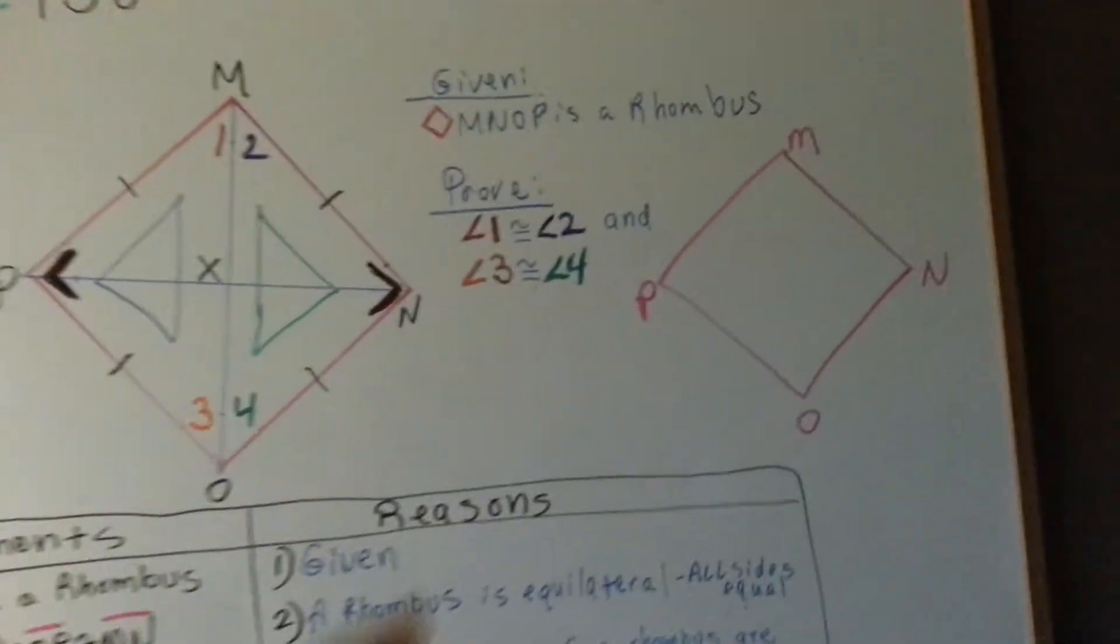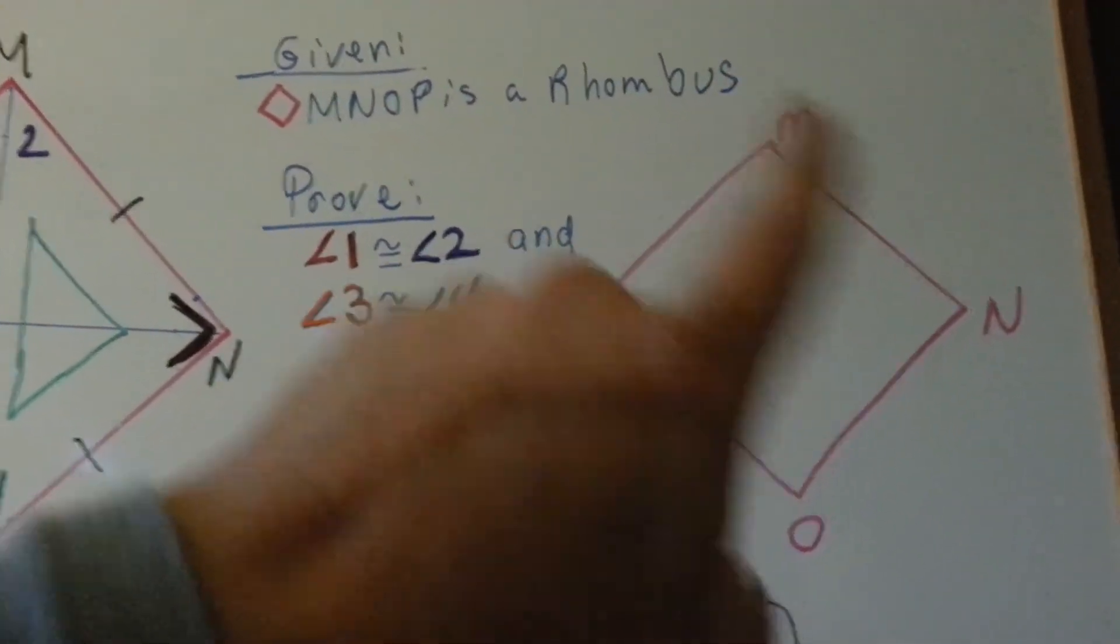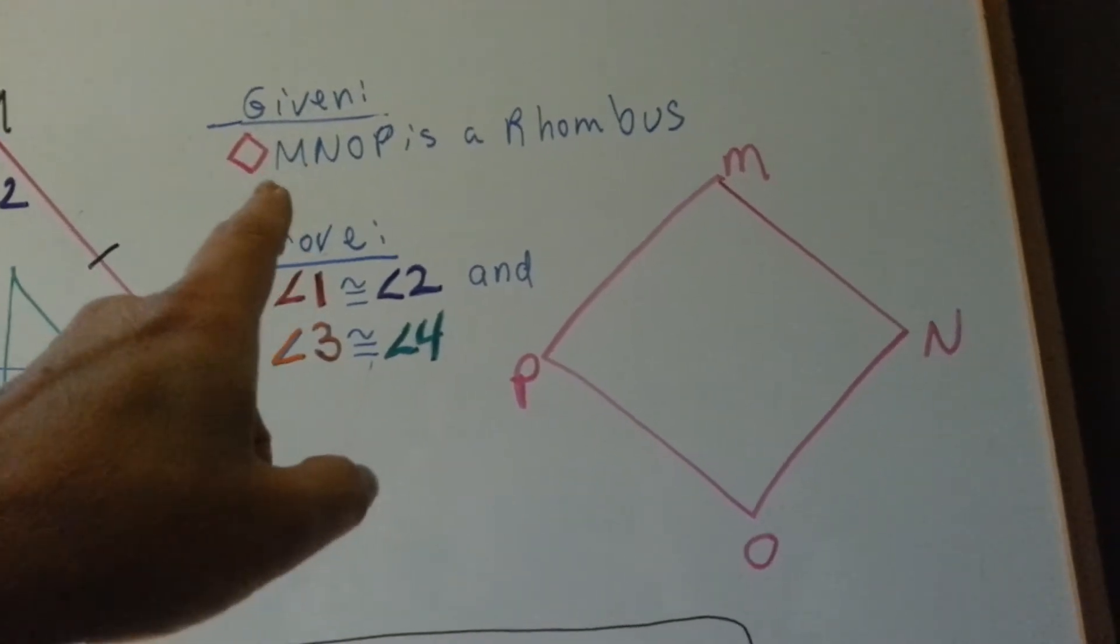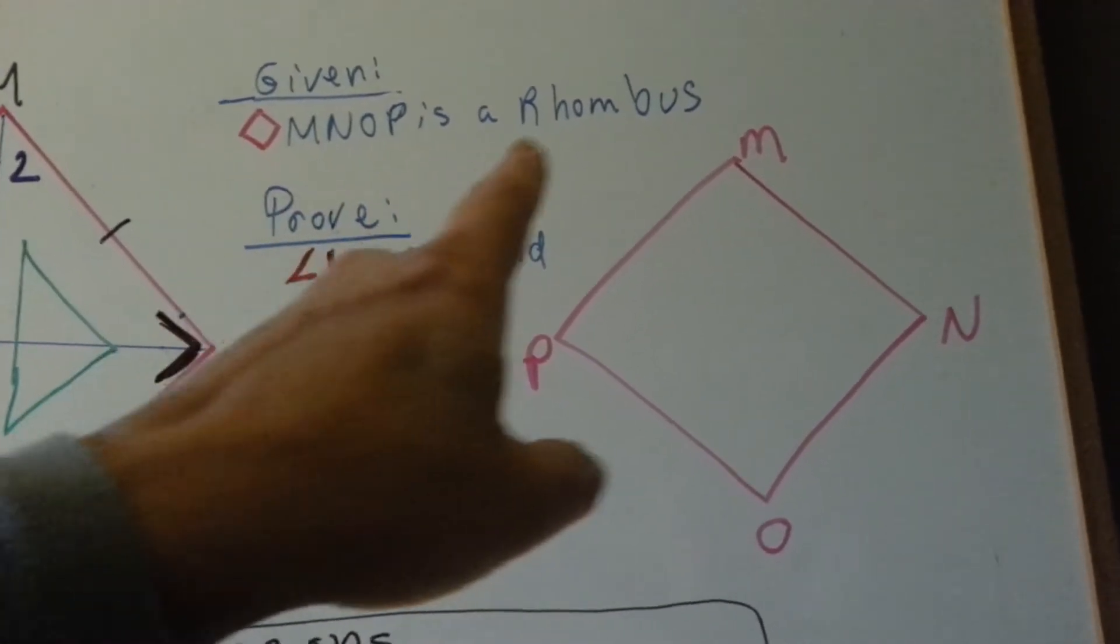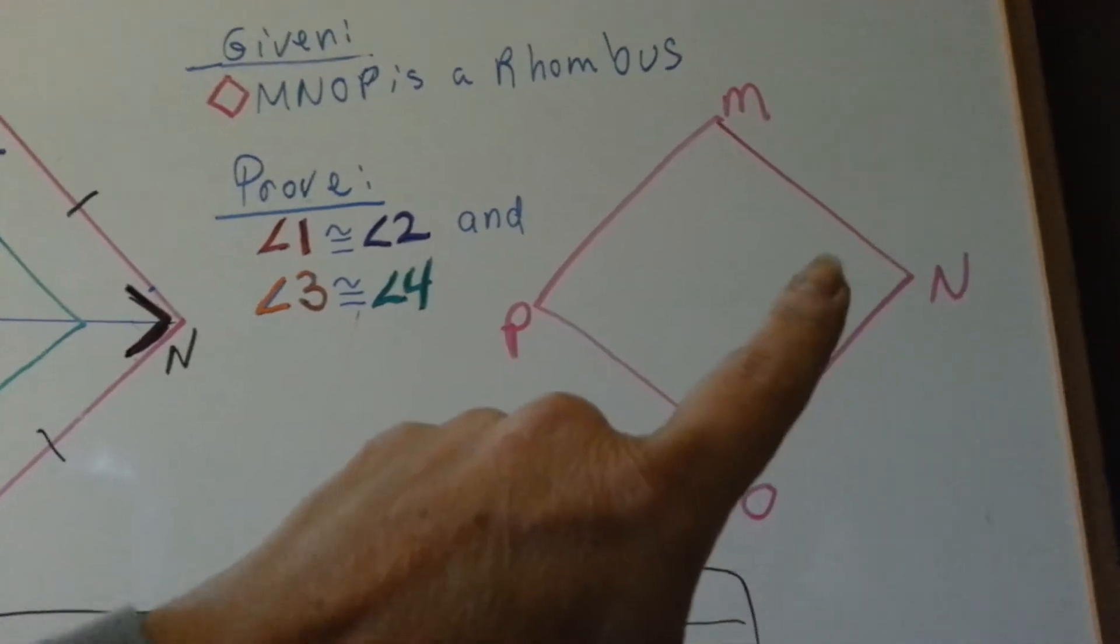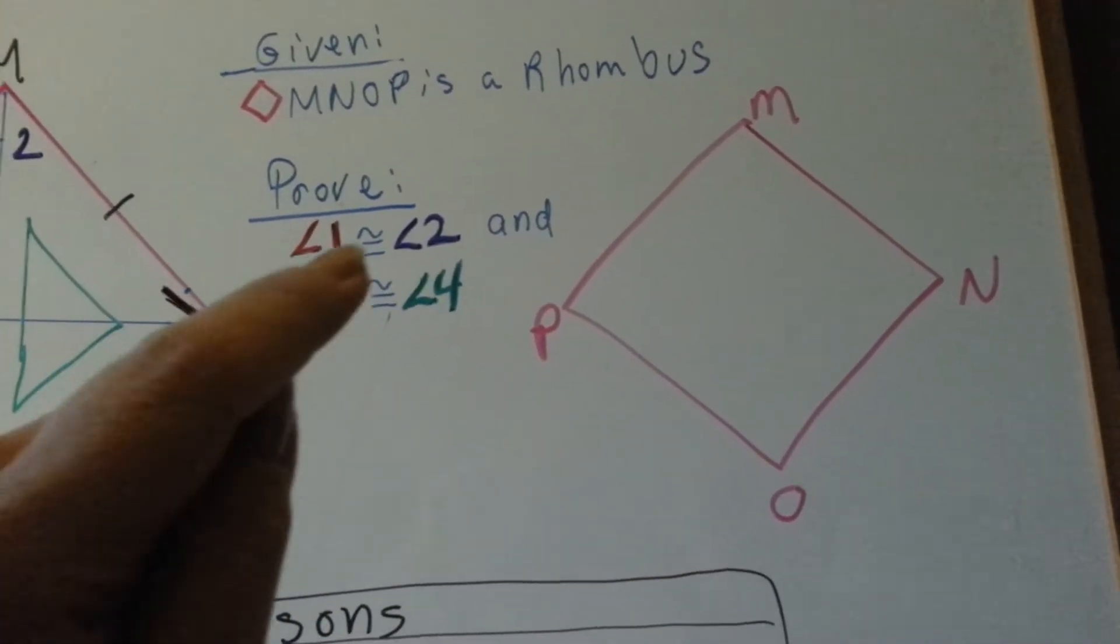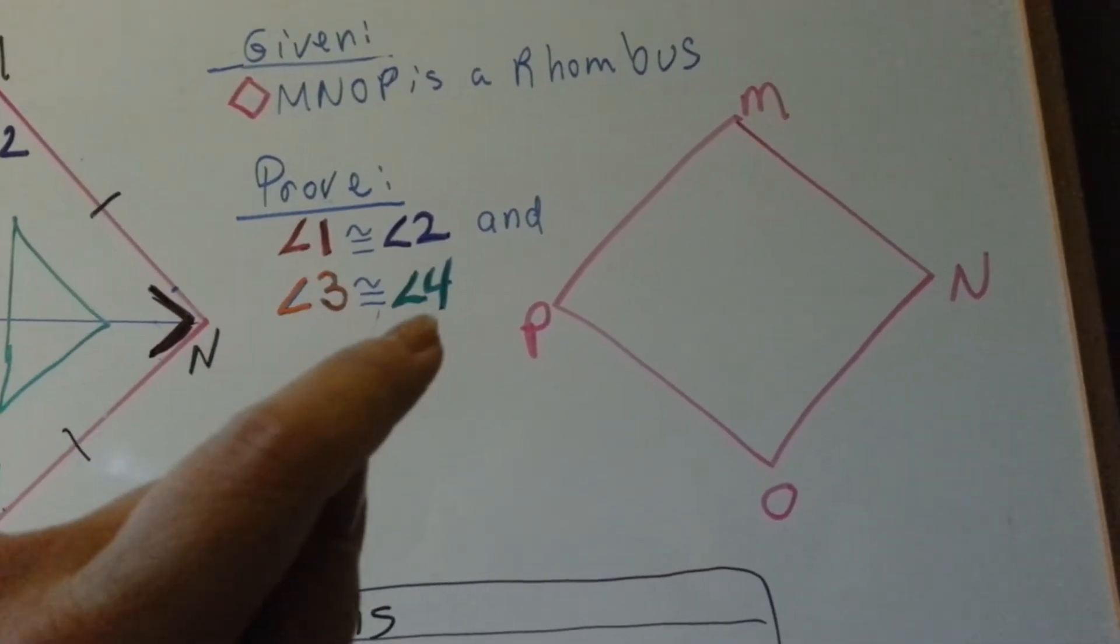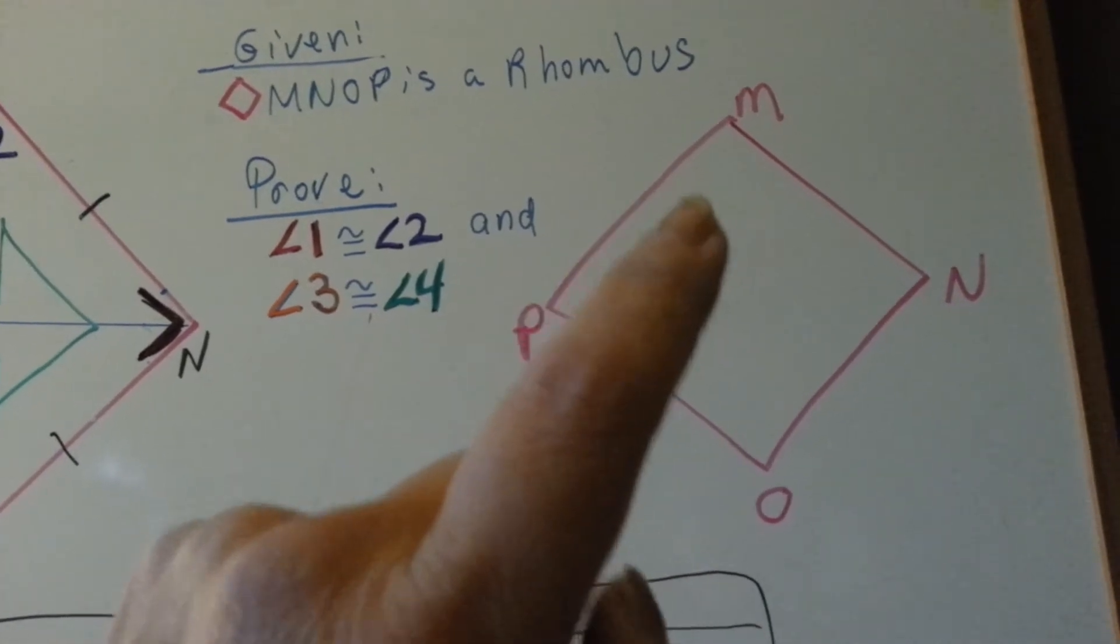We were given this original drawing, or we had to come up with the drawing on our own, because it said that the given is that M-N-O-P is a rhombus. That's all we've got, and we need to prove that angle 1 and angle 2 and angle 3 and angle 4 are congruent.